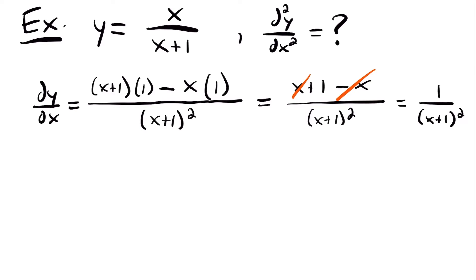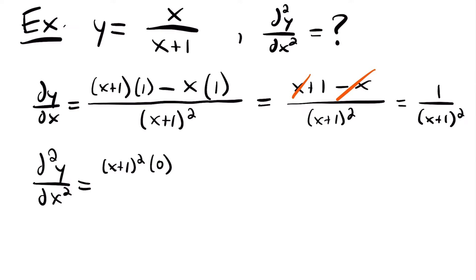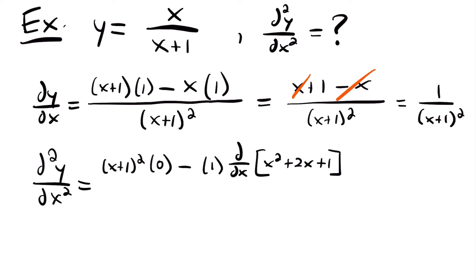Now let's move on to take our second derivative. We're going to take the derivative of this function again. d²y/dx² is equal to the original bottom function x plus 1 squared, times the derivative of the top — which is 0, since the derivative of 1 is 0 — minus the original top function 1, times the derivative of the bottom. We don't know a quick rule for the derivative of x plus 1 squared, so we need to expand it: x squared plus 2x plus 1, and then take the derivative.